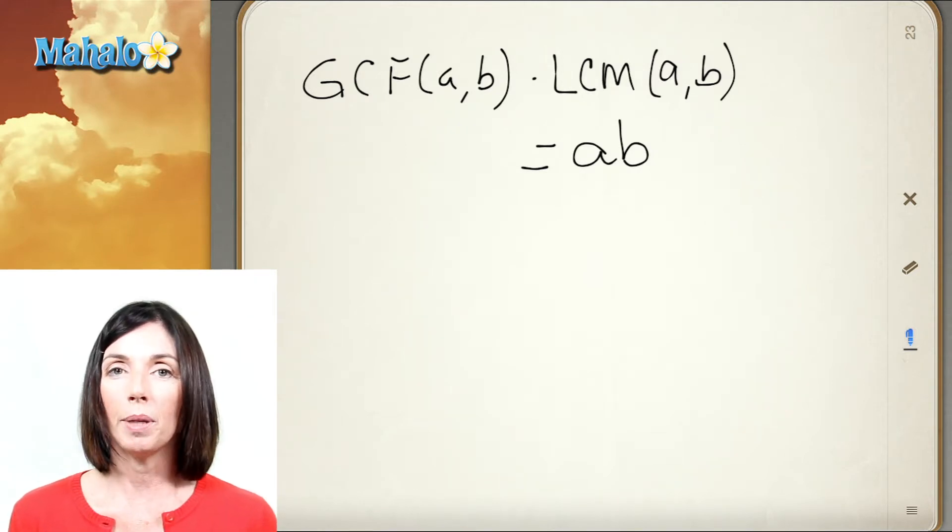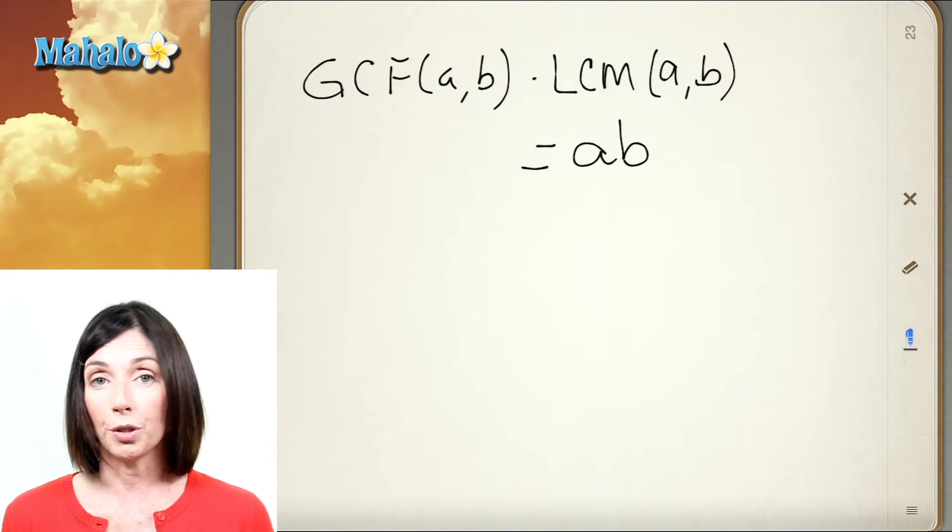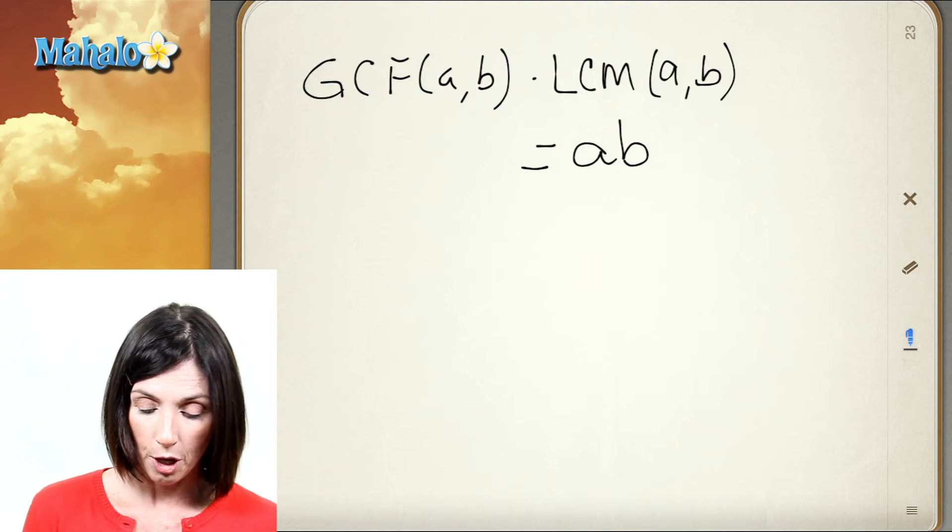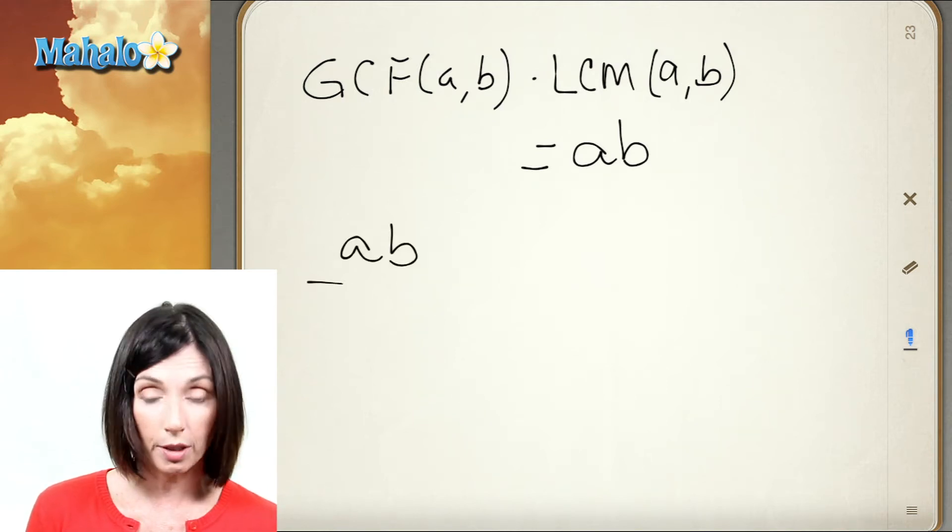Now that's pretty interesting because when you think about it, you know what your two numbers are so you can always find their product. If you know the greatest common factor, you can take the product of your two numbers, divide it by the greatest common factor, and you'll get the least common multiple.